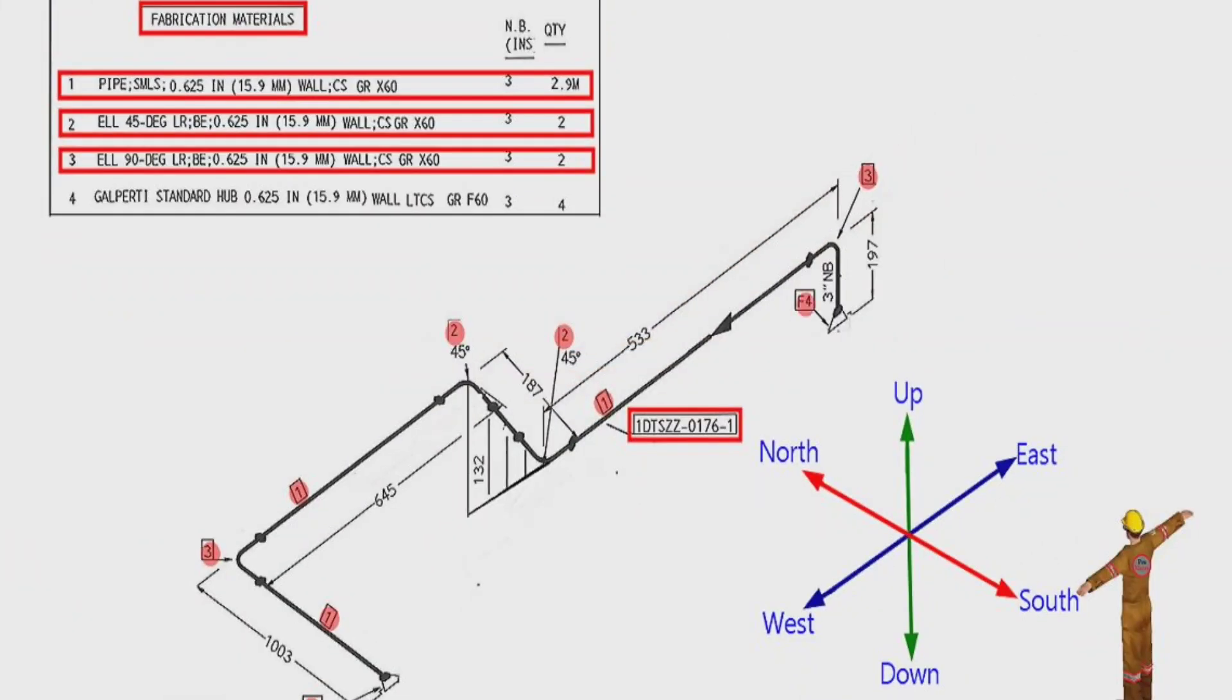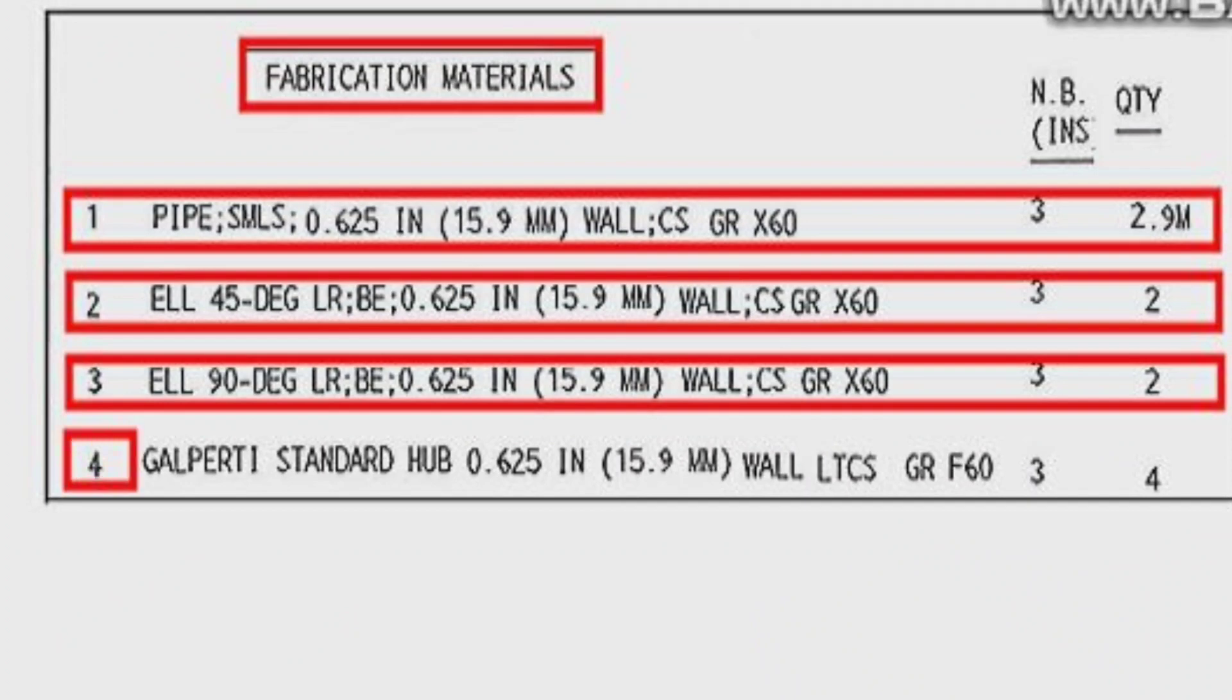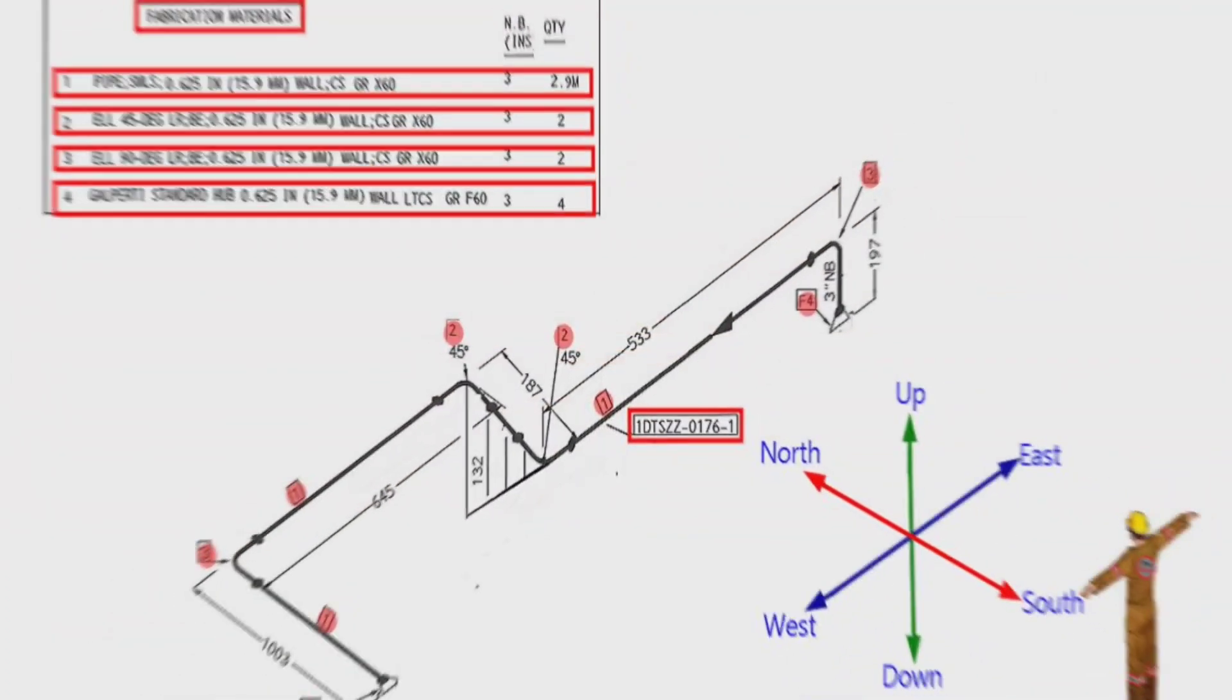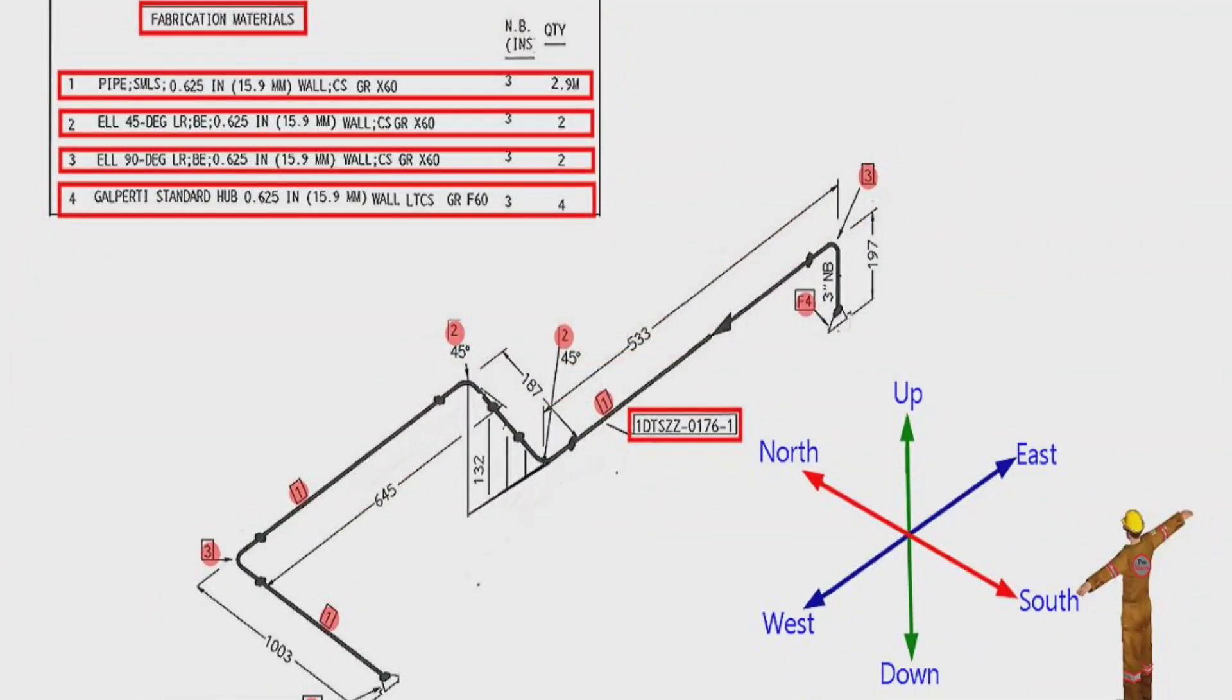Detail number 4 was used in two places in this pipe isometric. Let's look at the material list. Detail number 4, Calperdi standard hub flange, wall thickness is 0.625 inches or 15.9 mm, low temperature carbon steel material, grade is F60. We learned the materials which used on this pipe drawing.